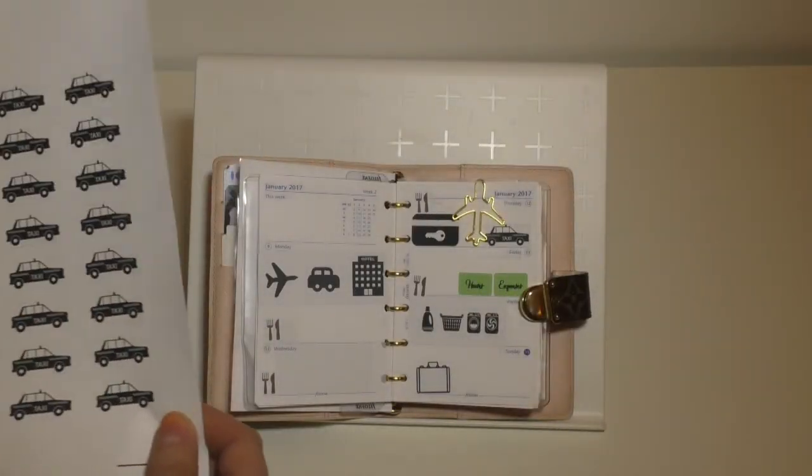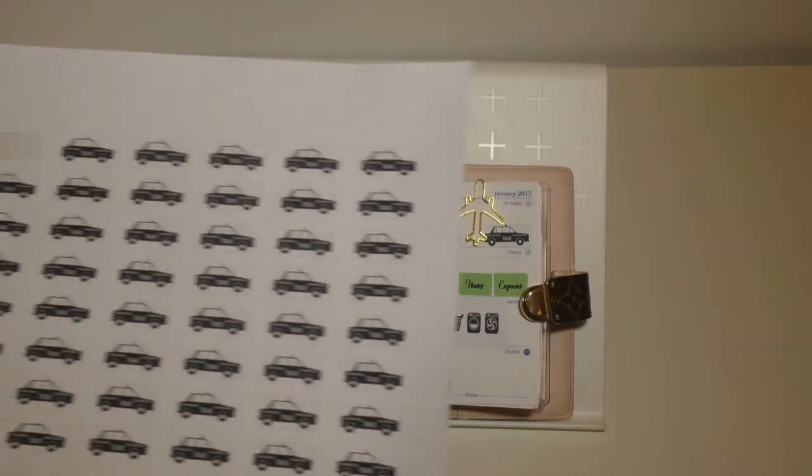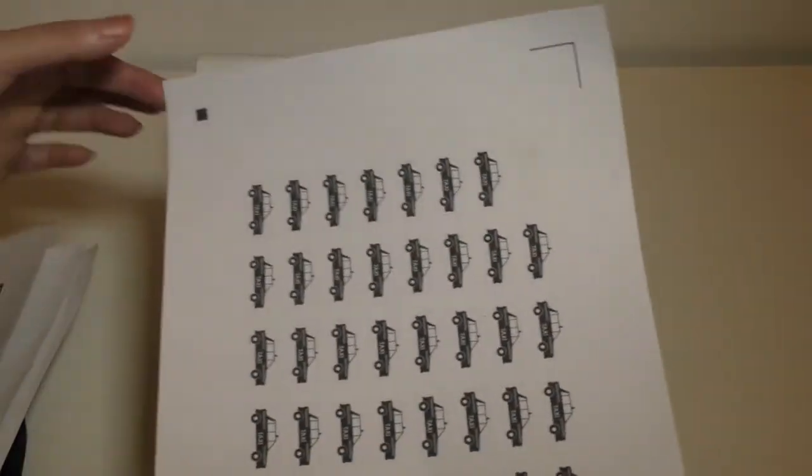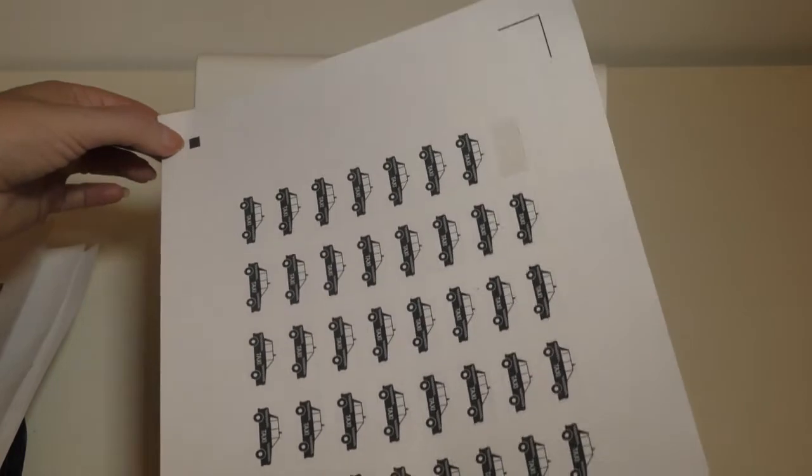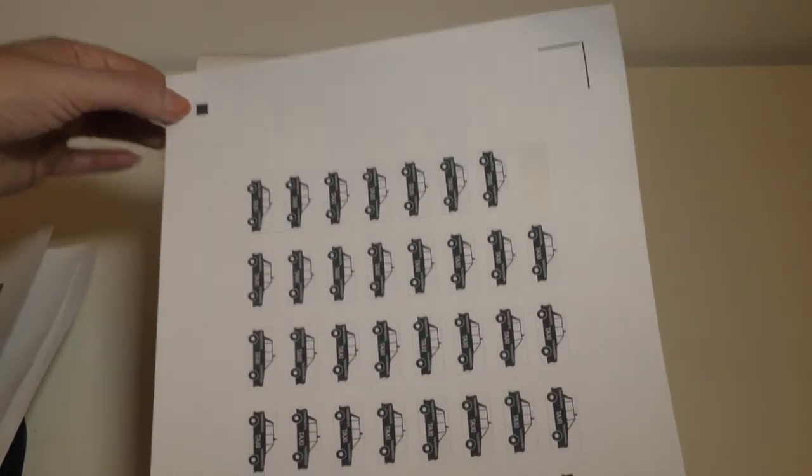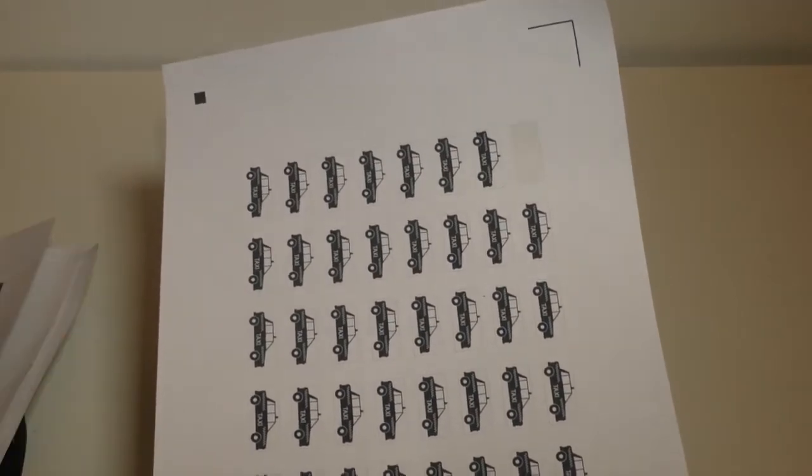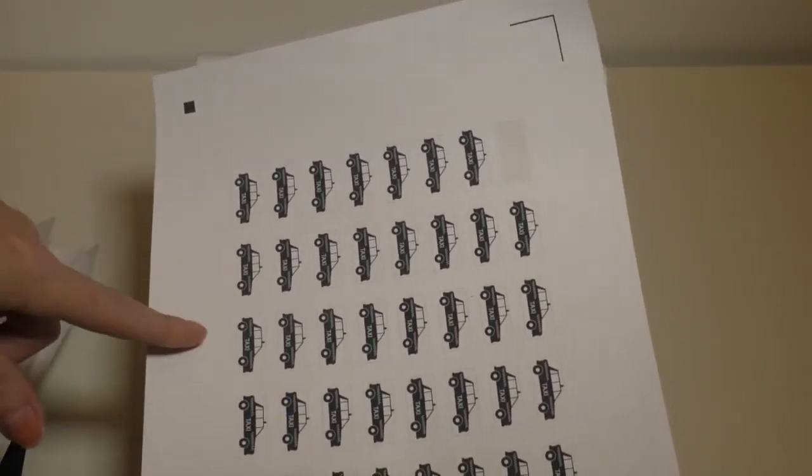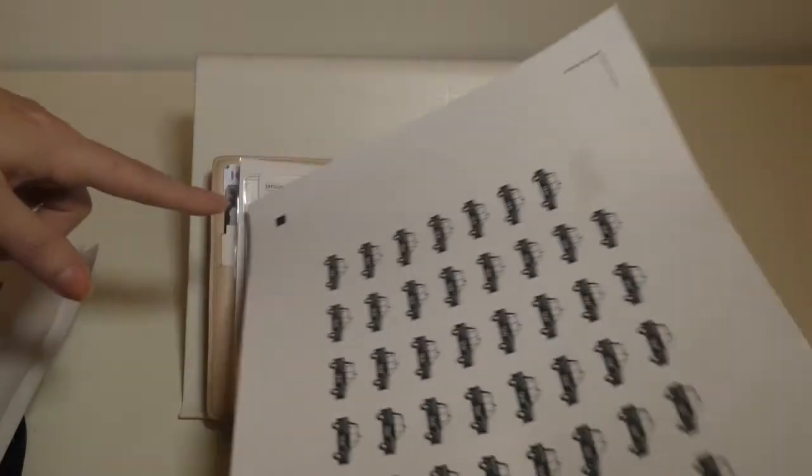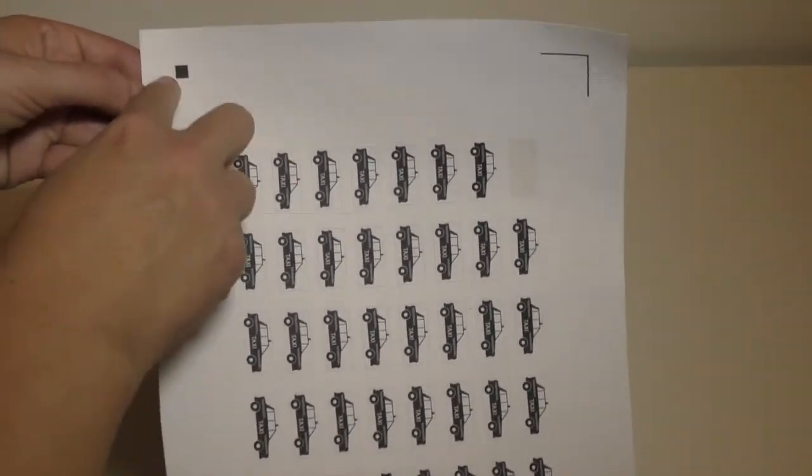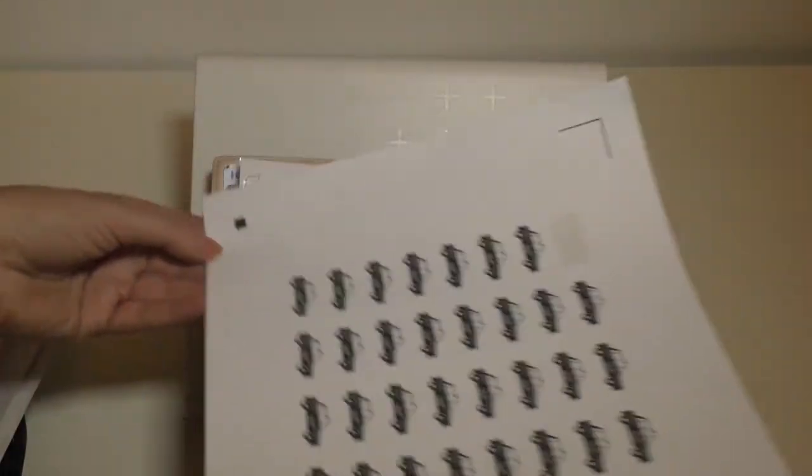You have to get the blade setting right, which is the least of your problems. It's really making sure that the system reads the registration marks. What you do is make your layout in the Silhouette program—I'm using Flaticon like I said—and then you print it through your normal printer and it prints these registration marks.